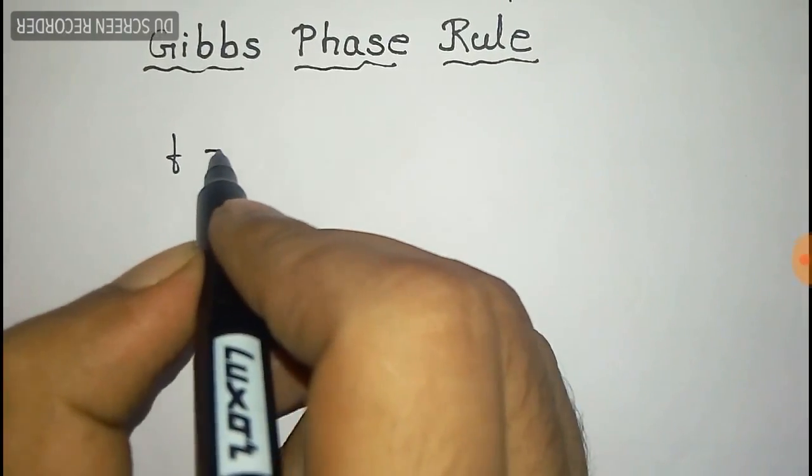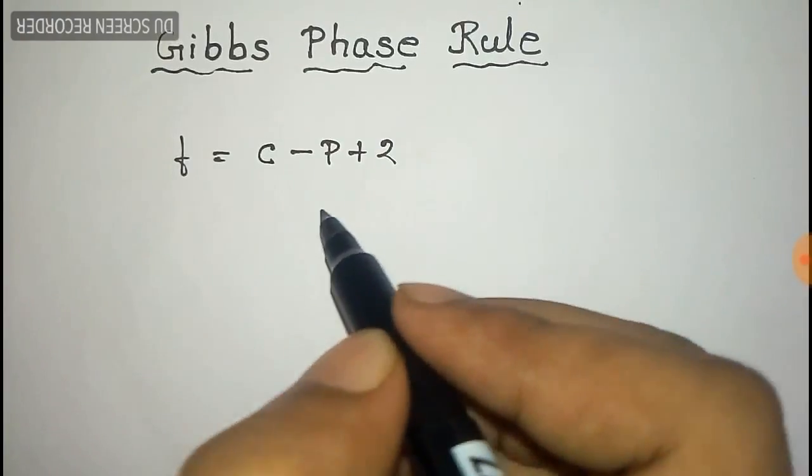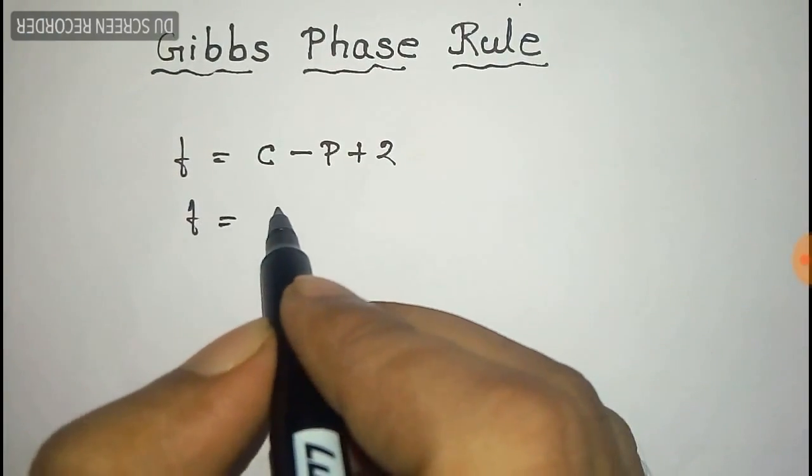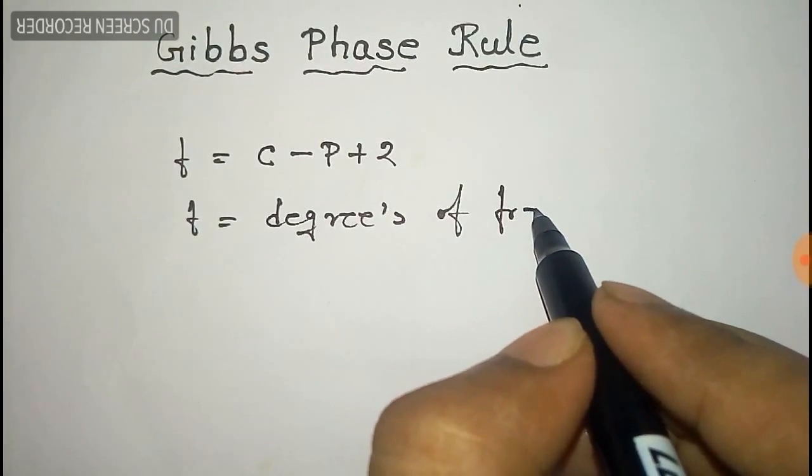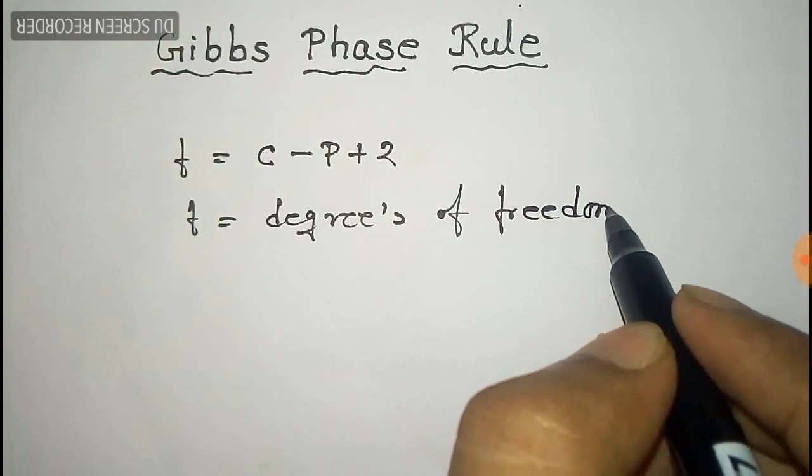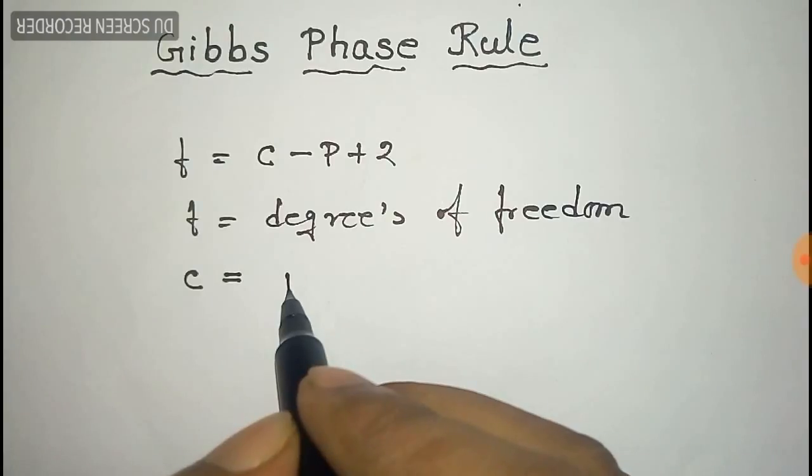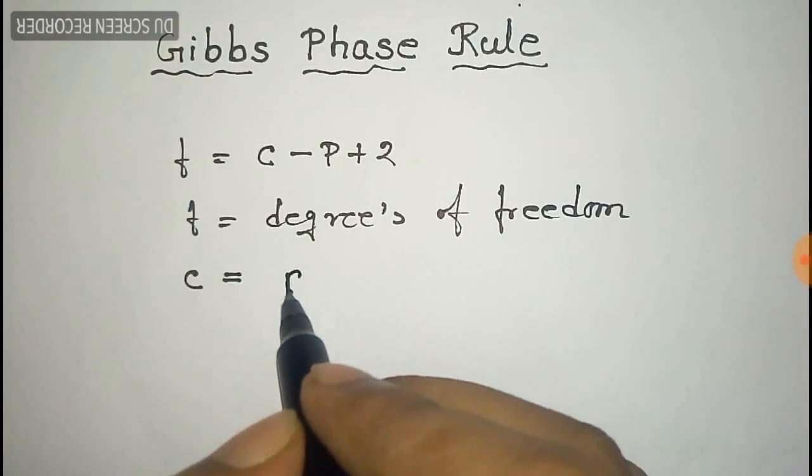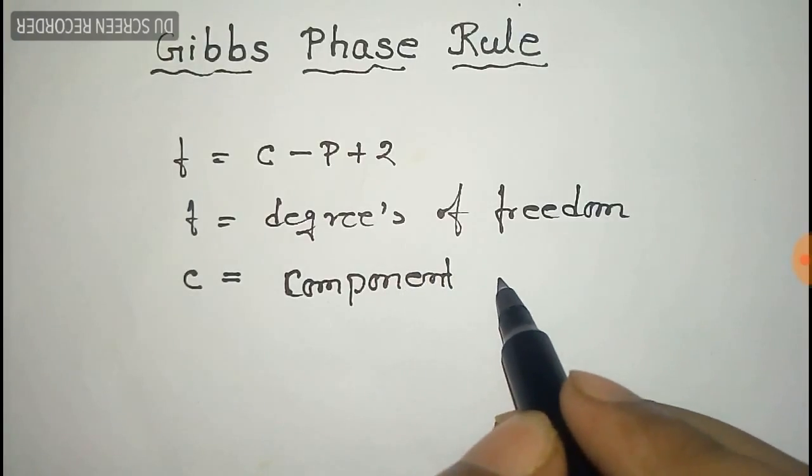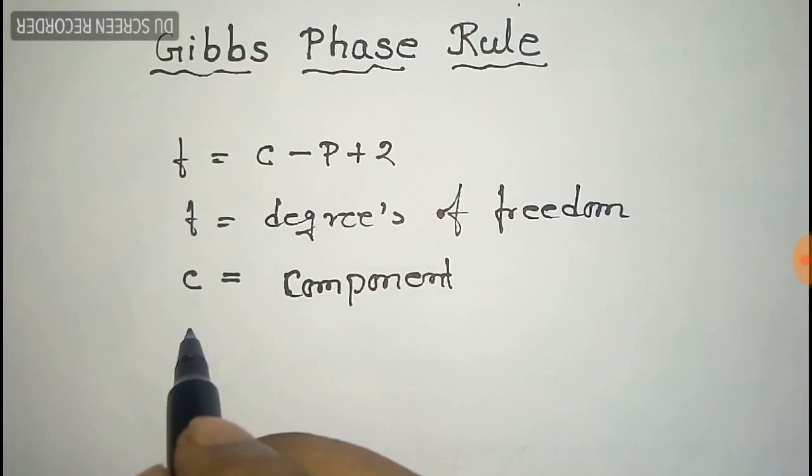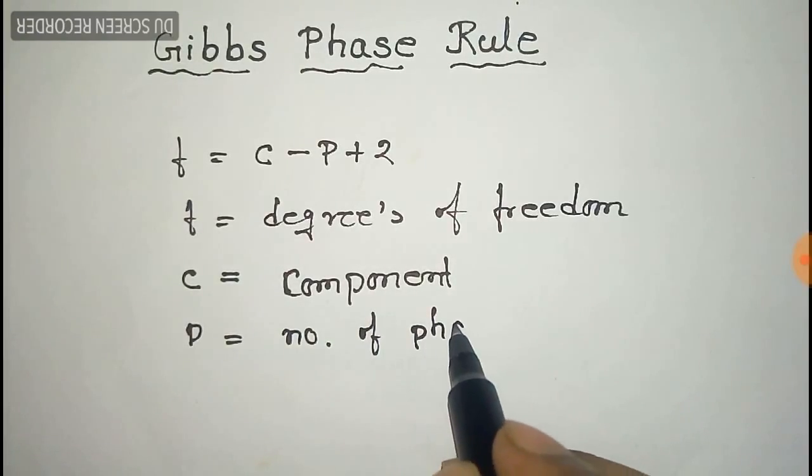And the rule is given by f = c - p + 2, where f is the number of degrees of freedom, c is the number of components of the system, and p is the total number of phases involved in the system.